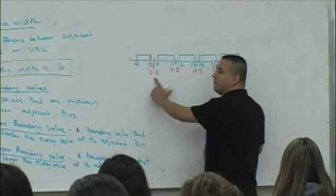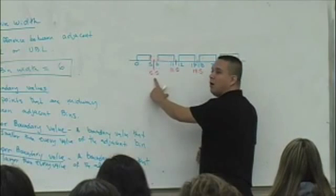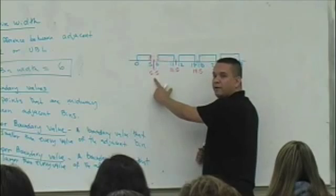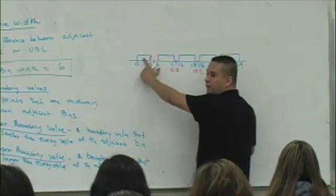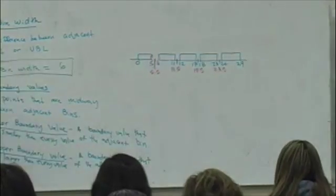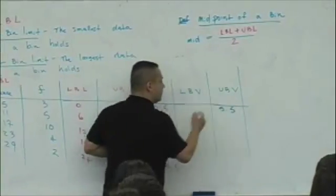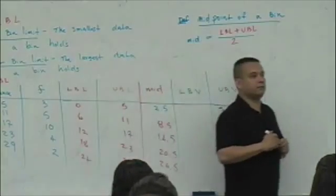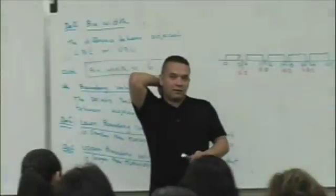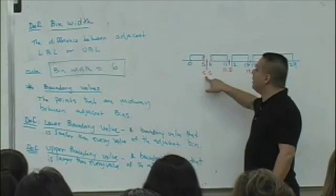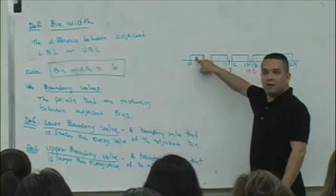So 5.5, the boundary value, would be called an upper boundary value for which bin? The first bin. 5.5 is an upper boundary value for the first bin. It's simply the boundary value that's larger than every value that goes in that first bin.